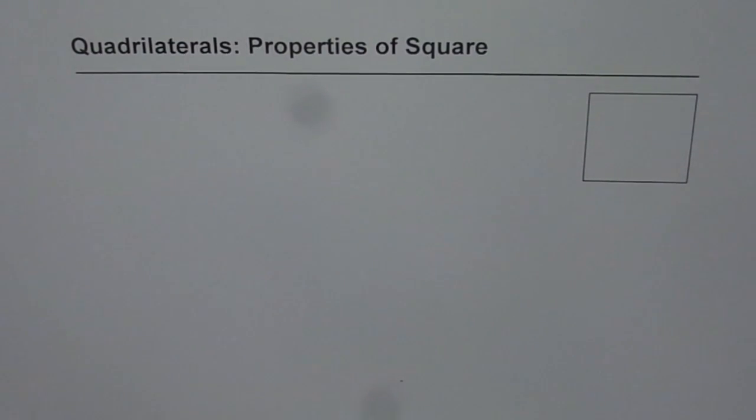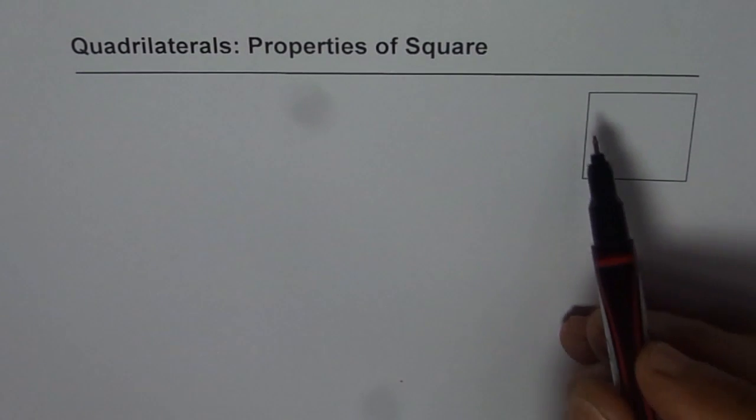I'm Anil Kumar and now let us explore some properties of quadrilaterals, and this time we'll take a square. Here we have a square. Can you tell me why it is a quadrilateral?